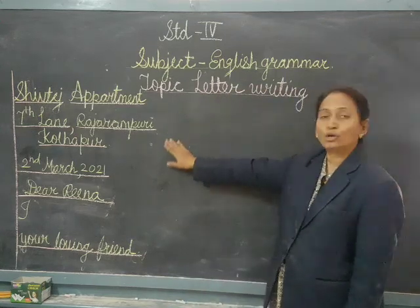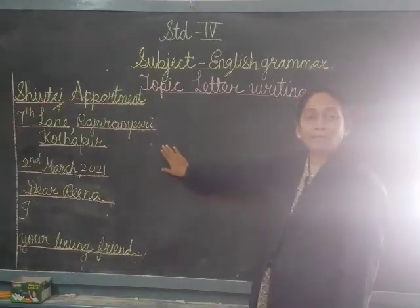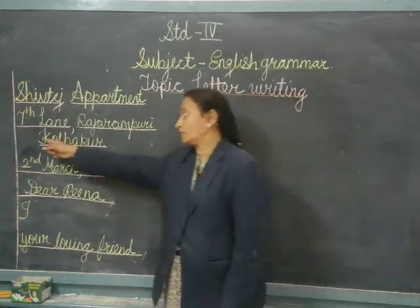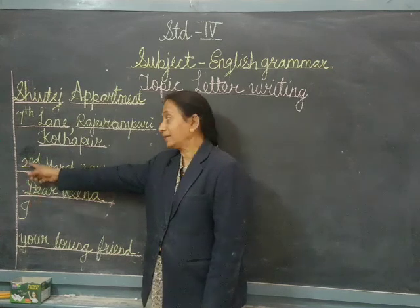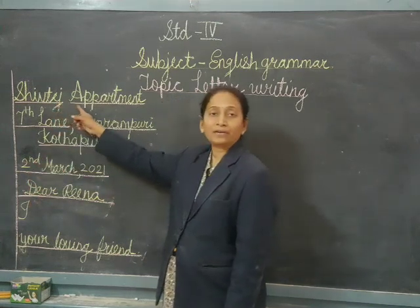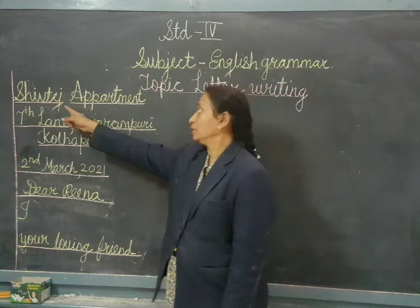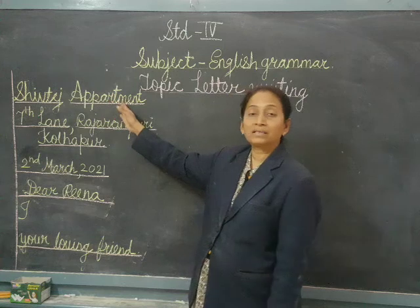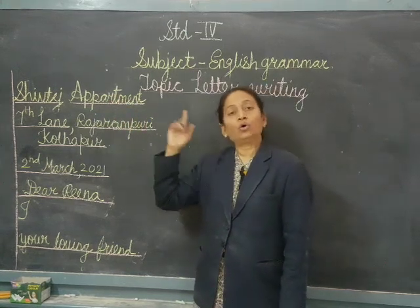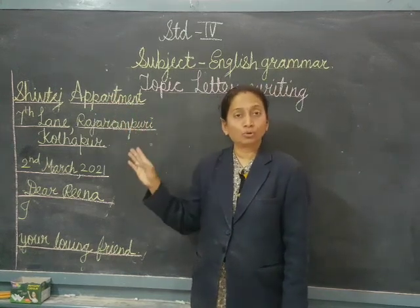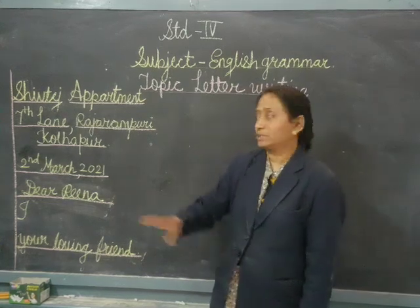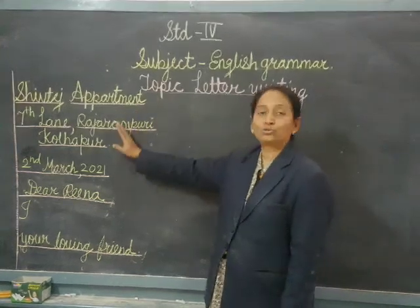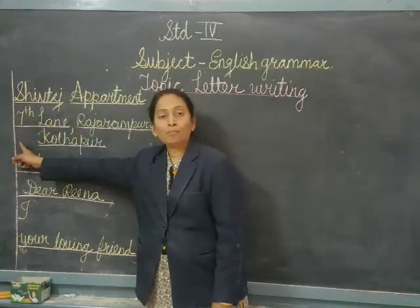Whenever you start writing the letter, this is your page — suppose this is the page of your book. When you have to write the letter, this is your margin. The red line is your margin. You have to start writing the address from the margin. For example: Shintej Apartment, 7th Lane, Rajarampuri, Kollapur. This is the address I have given as an example. You can write your own address or your friend's address here, but the address should start from the margin.